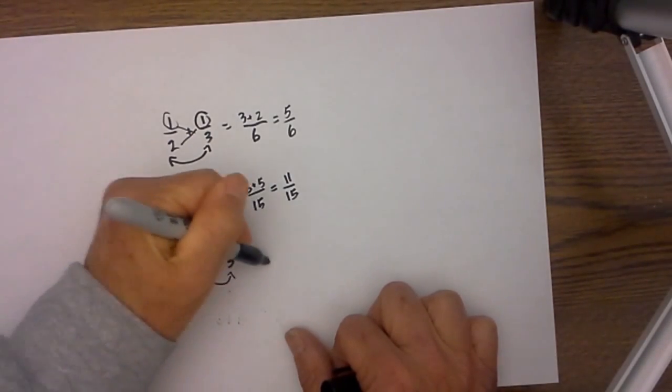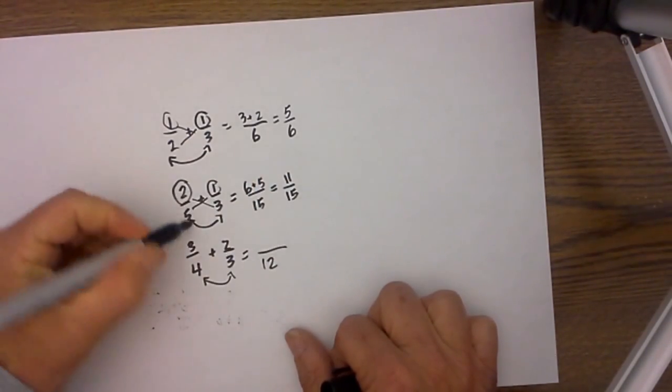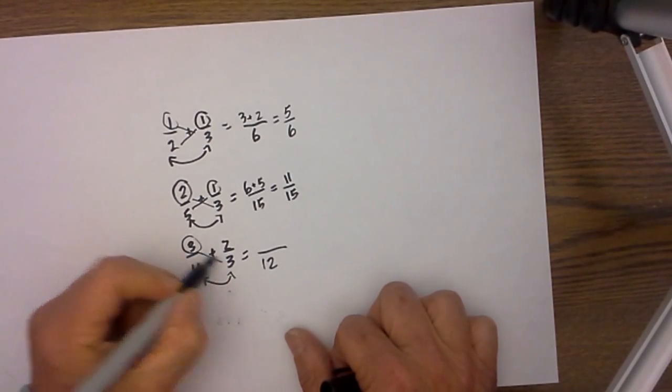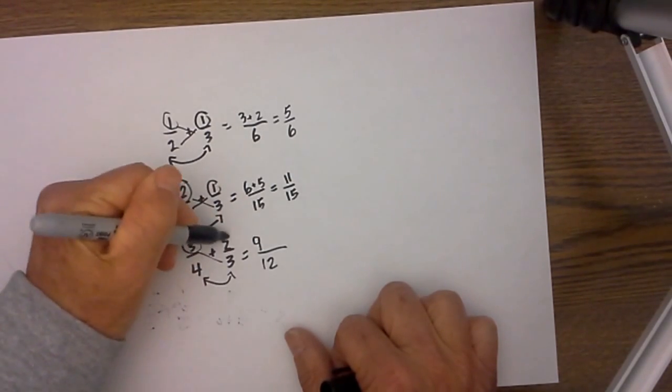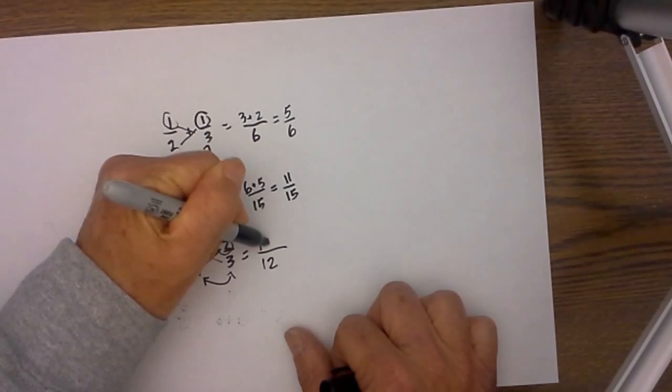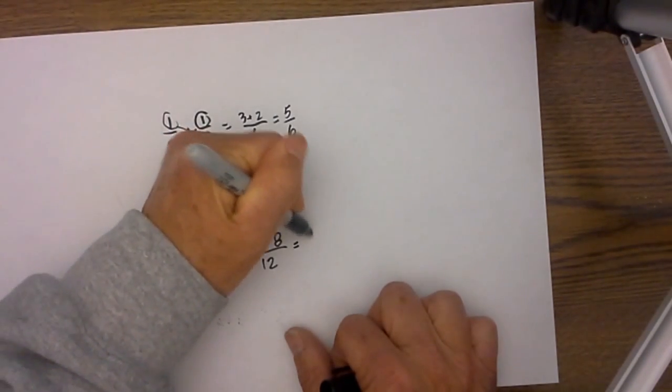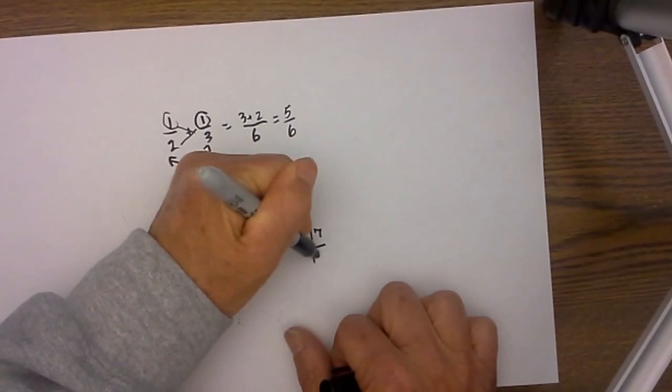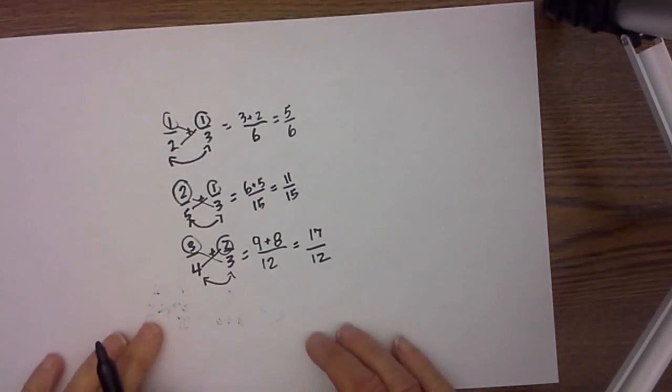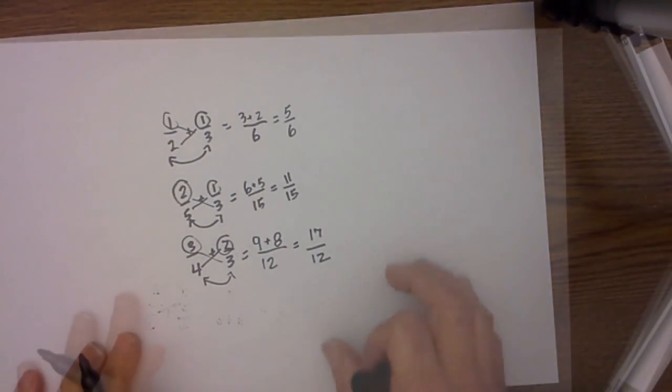4 times 3 equals 12. Start at the left. 3 times 3 equals 9. 2 times 4 equals 8. That equals 17 twelfths. That is an improper fraction but it is in its simplest form.